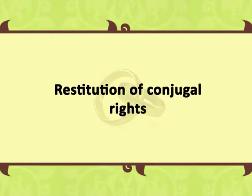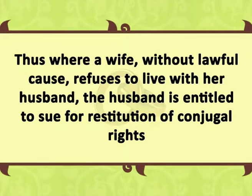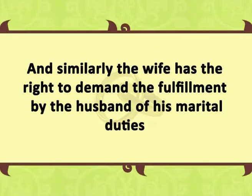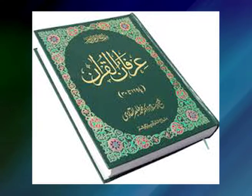Restitution of conjugal rights: the most important obligation arising out of a marriage is consortium, which not only means living together but implies a union of fortunes. A fundamental principle of matrimonial law is that one spouse is entitled to the society and comfort of the other. Thus, while a wife without lawful cause refuses to live with her husband, the husband is entitled to sue for restitution of conjugal rights. Similarly, the wife has the right to demand the fulfillment by the husband of his marital duties. The right, however, is not absolute. The Holy Quran enjoins husbands to retain their wives with kindness or to part with them with equal consideration.